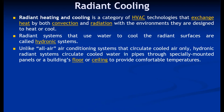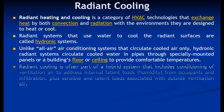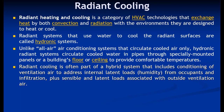Unlike all-air conditioning systems that circulate cooled air only, hydronic radiant systems circulate cooled water in pipes through specially mounted panels or a building's floor or ceiling to provide comfortable temperatures. Radiant cooling is often part of a hybrid system that includes conditioning of ventilation air to address internal latent loads, especially humidity from occupants and infiltration, plus sensible and latent loads associated with the outside ventilation load.